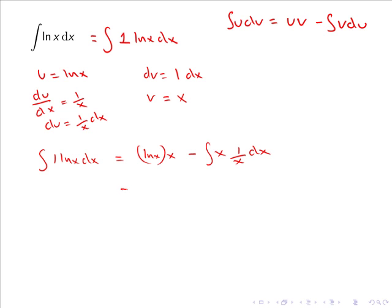So here we can tidy this up to give us x ln x minus the integral, and now here we have x multiplied by 1 over x so these will cancel and we simply have 1 dx.